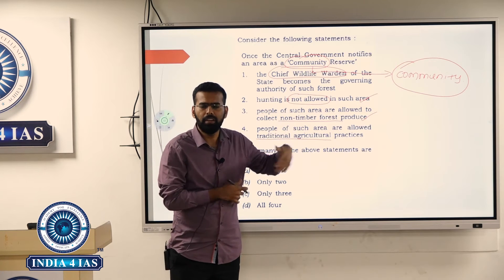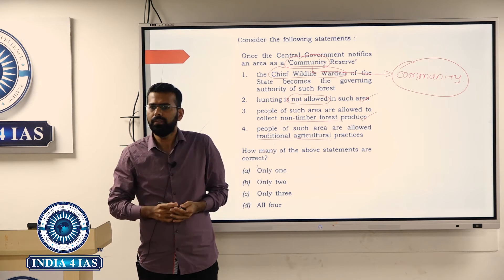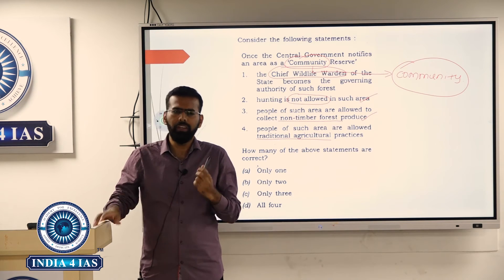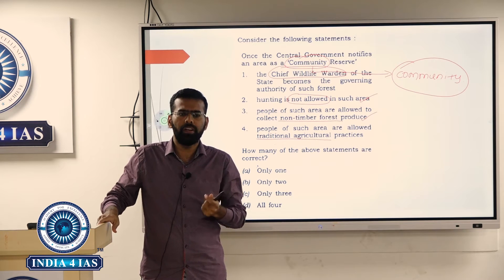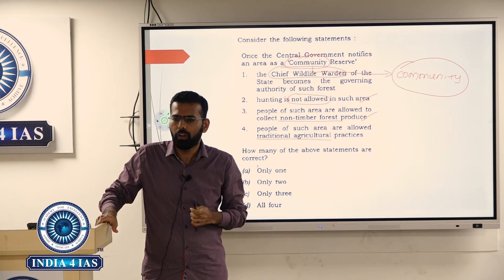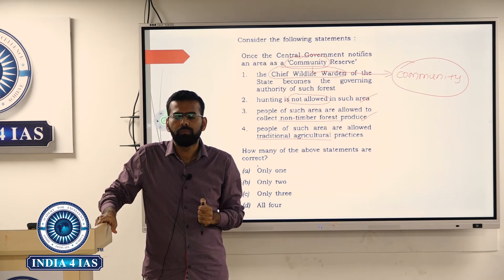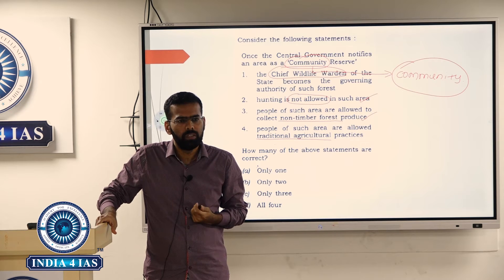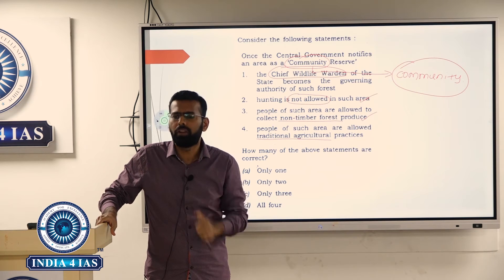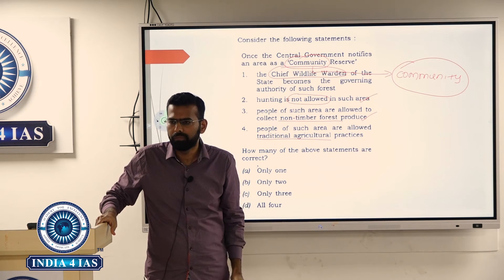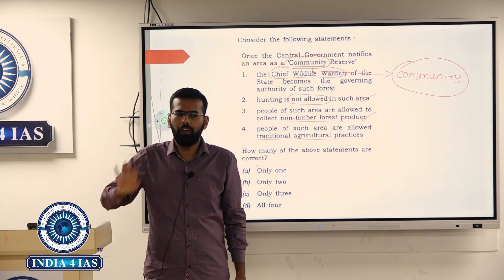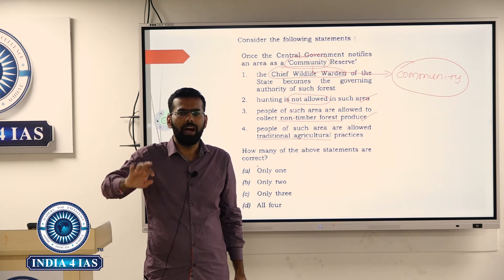Green hydrogen was in the news last year, so this question was asked. Statement 1: 'It can be used directly as a fuel for internal combustion.' You have 'can be' — which makes it a general statement — but also 'directly,' which adds some assertiveness. Statement 2: 'It can be blended with natural gas and used as a fuel for heat or power generation.' Can be — general statement, a possibility. Statement 3: 'It can be used in the hydrogen fuel cell to run vehicles.' Again, can be.